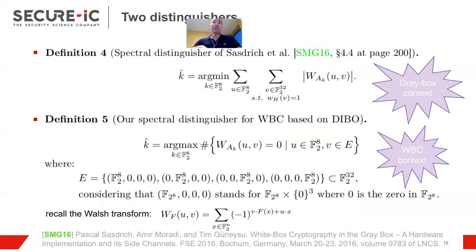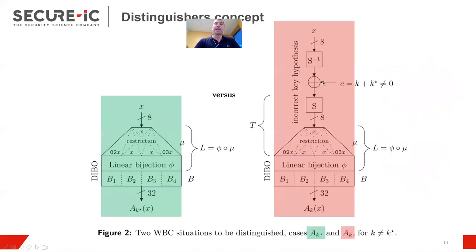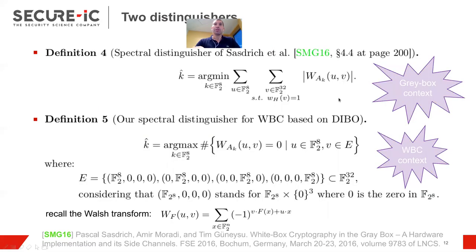So, the first distinguisher, which is known, is that I mentioned already from Sastrich et al., from FSE 2016, where actually they leverage a Walsh transform applied on this AK. So, AK is this function or this one, depending the key guess is the correct one or not, you see. And so, what is a spectrum, by the way?